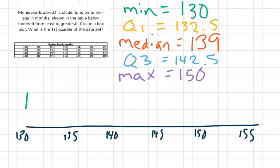And then we have quartile 1, which is 132.5. So that's going to go right here. And then we have our median of 139.